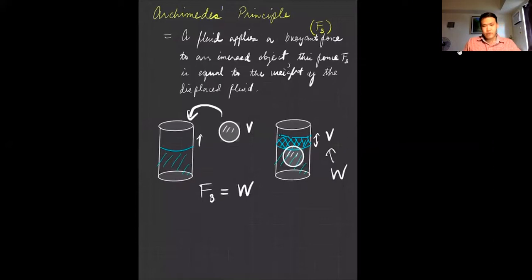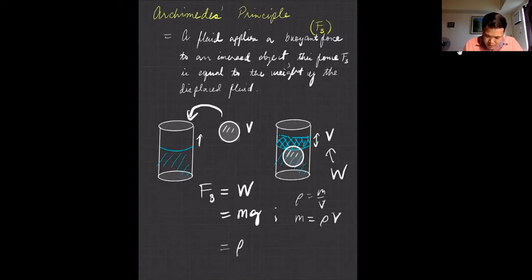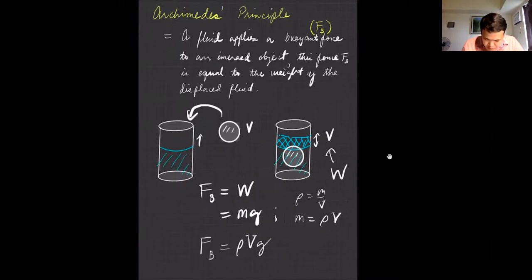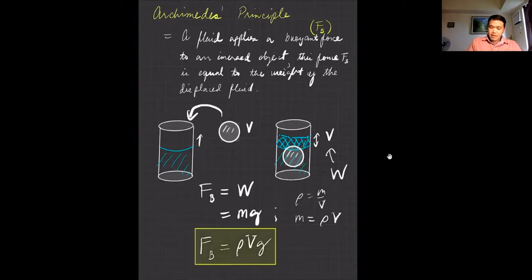F_B is your buoyant force. That buoyant force equals mass times g, and since density equals mass over volume, you can express mass as density times volume. So the equation becomes: F_B equals density times volume times g. The buoyant force depends on the density of the fluid displaced.